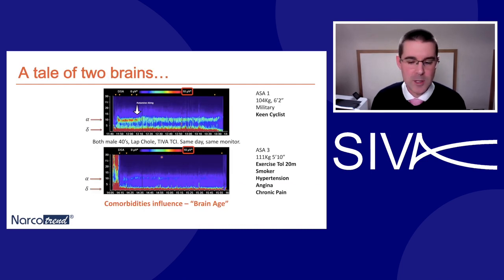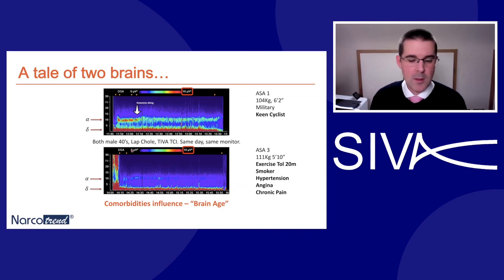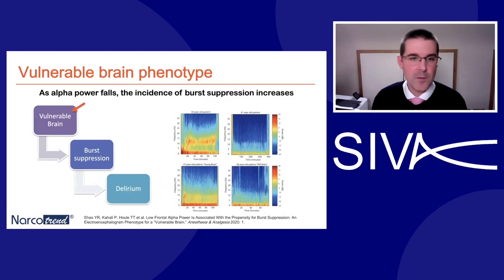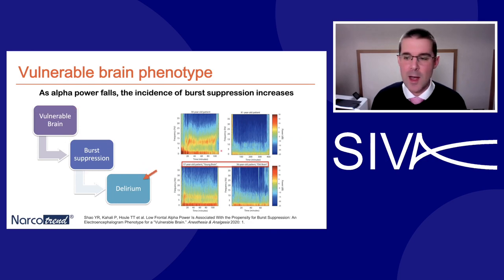But it's not just about age. Here are two 44-year-old patients having the same operation, the same day, with the same technique using the same monitor. Notice the difference in alpha power between these two patients. The brain age effect is not just chronological — all these comorbidities can accelerate brain age, as has been demonstrated in the sleep literature and recently in the anaesthetic literature. The power of these alpha oscillations seems to be important, as the vulnerable brain phenotype describes patients with a low alpha power and a higher probability of burst suppression, which may be a marker of risk for post-operative delirium. This low alpha power may be a marker for a reduced neurocognitive reserve.